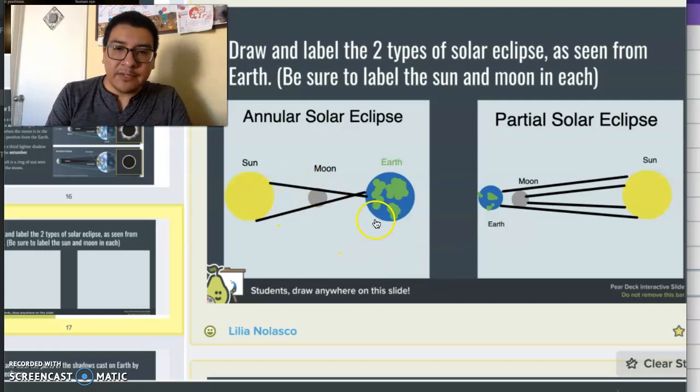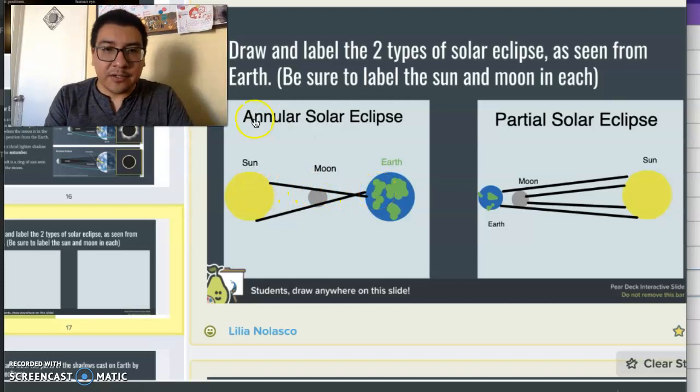We see here that one of the students provided this representation of the shadows, the celestial bodies, the sun, moon, and Earth, and the shadows that are cast on Earth. On the left side, this is an annular solar eclipse. And you can tell that because they didn't label the shadows, but I didn't ask them to. But here, the little cone closest to the Earth would be the antumbra.